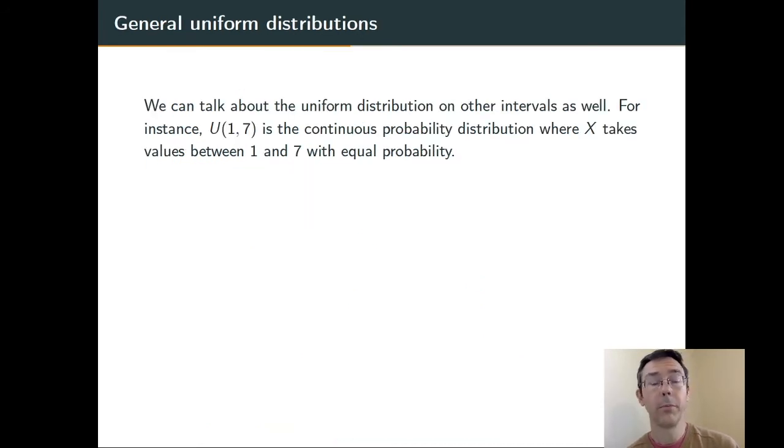We can talk about uniformly distributed probabilities on other intervals. For instance, U(1,7) is going to be a continuous probability distribution where X can be anywhere from 1 to 7, with equal probability.